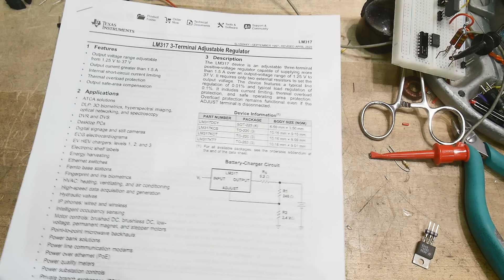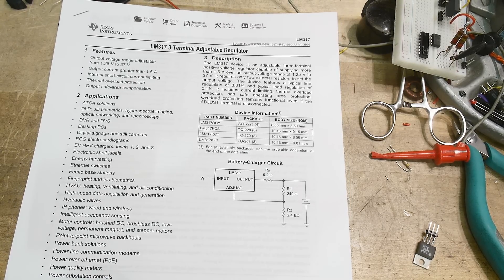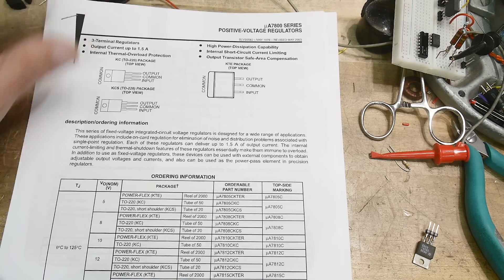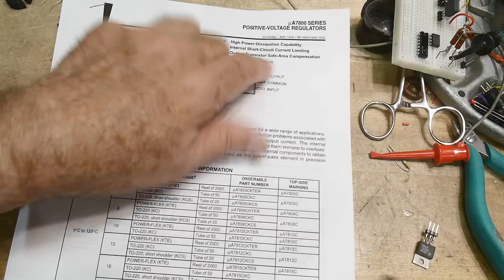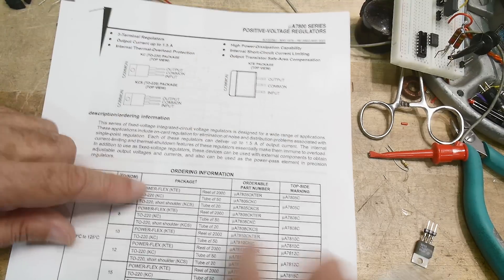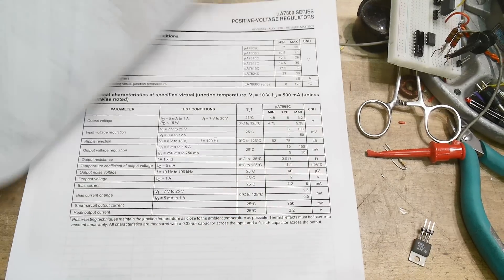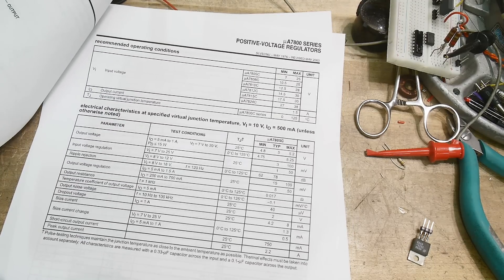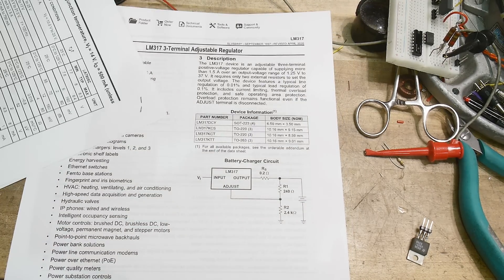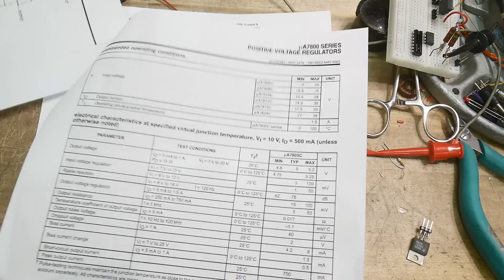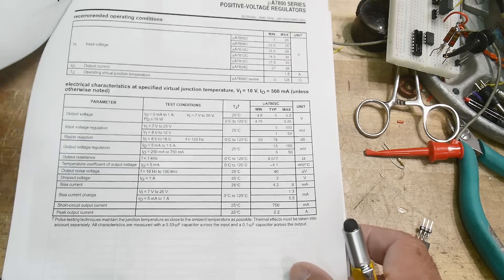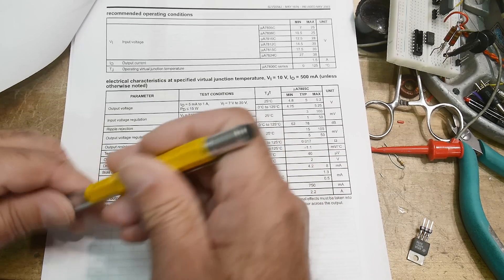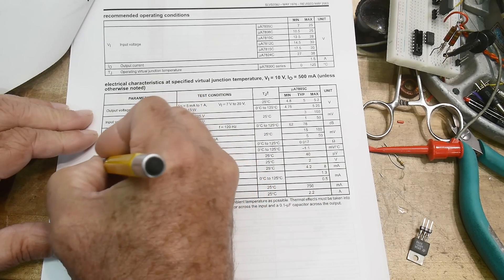Let's take a look at a part that is not adjustable. This is a 78 something, like a 7805 or 7812 or something like that. And it will have the same specification in it somewhere. So this one is down here. They're calling it dropout voltage.